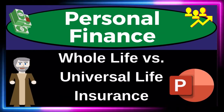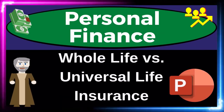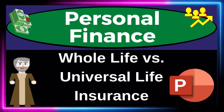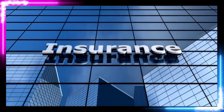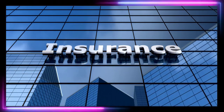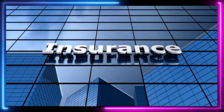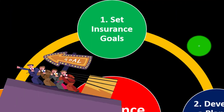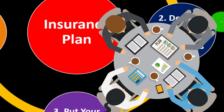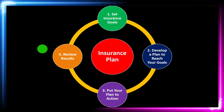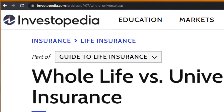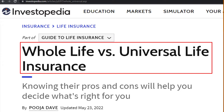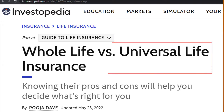Personal Finance PowerPoint Presentation: Whole Life vs. Universal Life Insurance. Prepare to get financially fit by practicing personal finance. Insurance is part of our overall risk mitigation strategy where we follow the adage of measure twice, cut once — put a formal process in place looking something like: set the goals, develop a plan to reach them, put the plan in action, review the results and repeat the process periodically. Most of this information can be found at Investopedia's Whole Life vs. Universal Life Insurance article online.